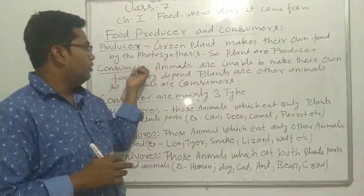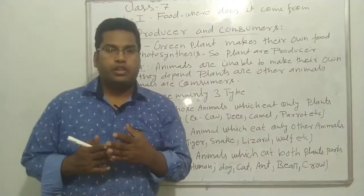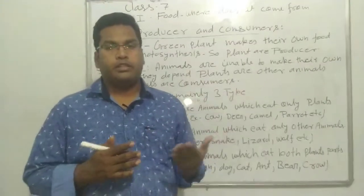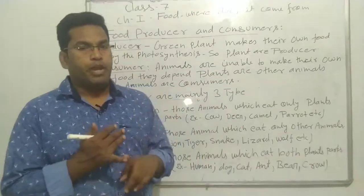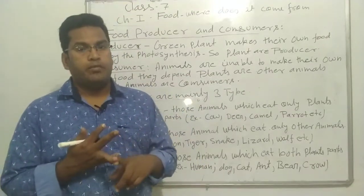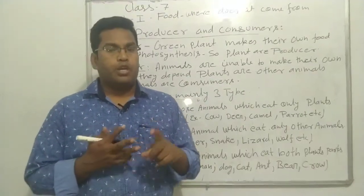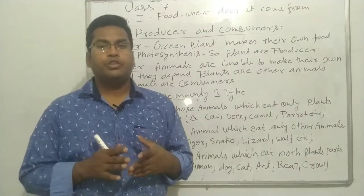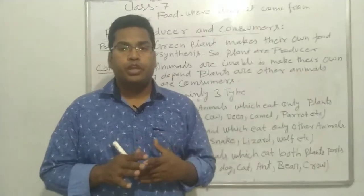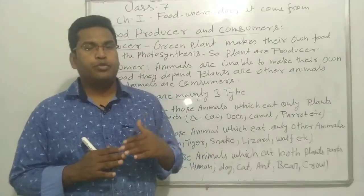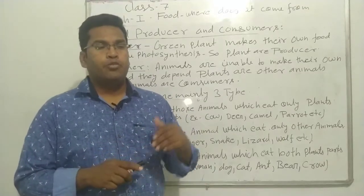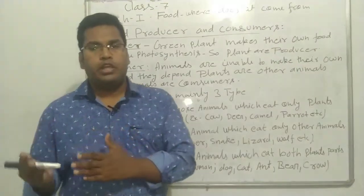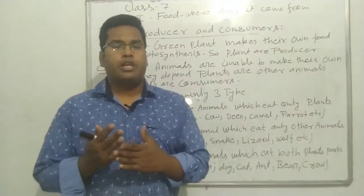Those who do not produce their own food depend on other things — like plants and animals. Animals and human beings cannot produce their own food. They are dependent on other plants or small animals.